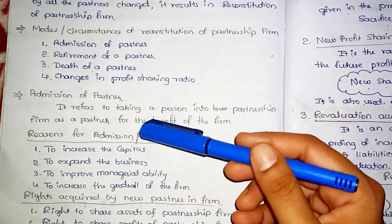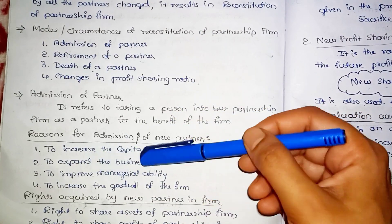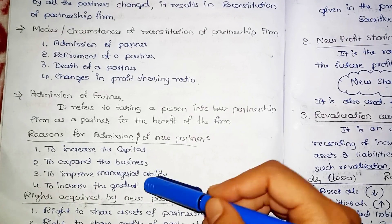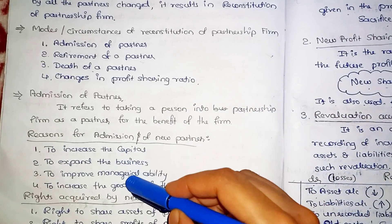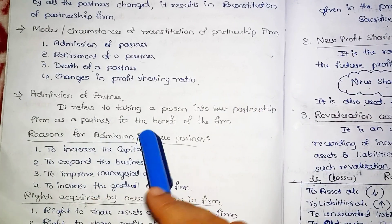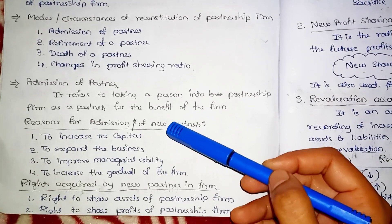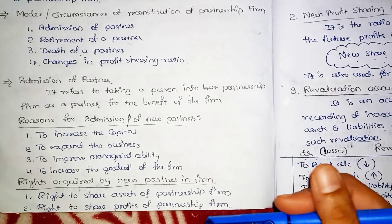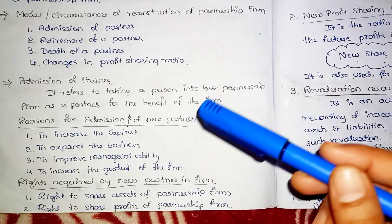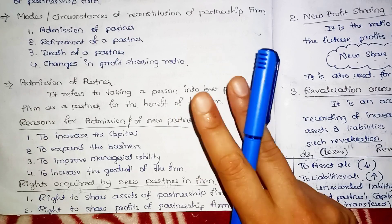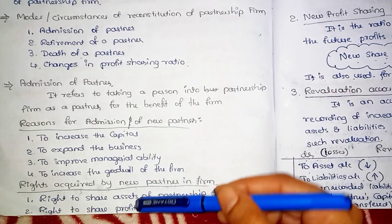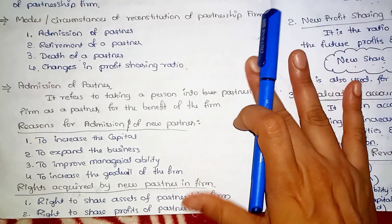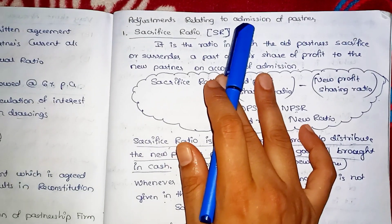The reasons for admission of a new partner include: to increase capital, to expand business, to improve managerial ability, and to increase the goodwill and reputation of the firm. Rights acquired by the new partner include: a share in the assets of the firm and the right to share profits of the firm.